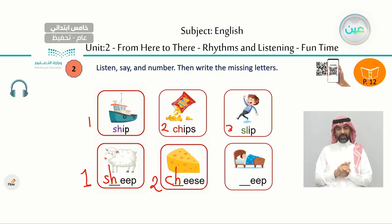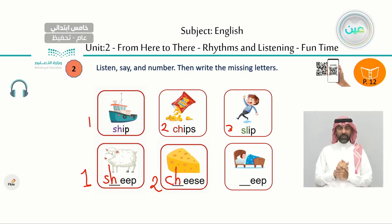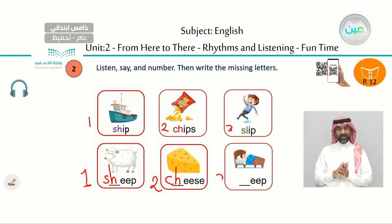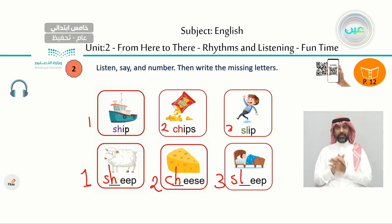Look at this boy — the last one. Sleep. Number three — consonant blend. What is it? S and L. Excellent. S-L says sl, sleep. Perfect, excellent.